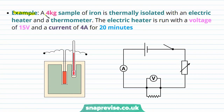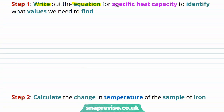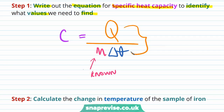For example, a four kilogram sample of iron is thermally isolated with an electric heater and a thermometer. The heater is run at 15 volts and 4 amps for 20 minutes. The initial temperature of the iron is 20 degrees Celsius and the final temperature is 60 degrees Celsius. Assuming all electrical energy is converted to thermal energy in the iron, what is the specific heat capacity of iron? We write out C equals Q divided by mass times delta theta to identify what we need to find.